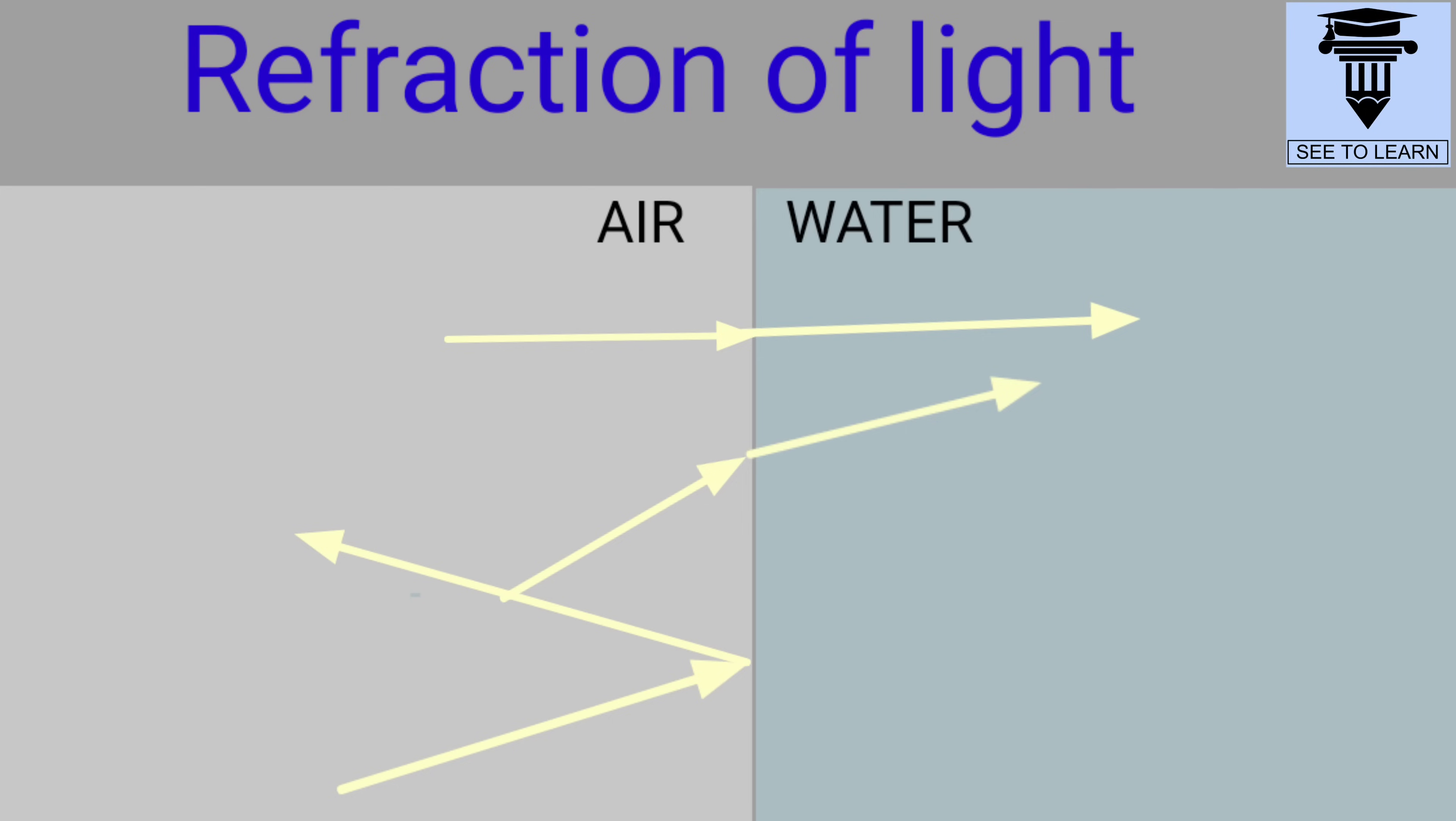Here the light slows down as it passes from air to water. The light that strikes obliquely to the surface of the second medium bends at the boundary between the two media. Whereas the light that strikes the surface exactly perpendicular passes along a straight line.